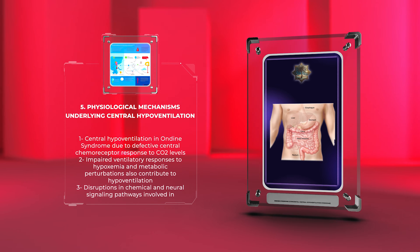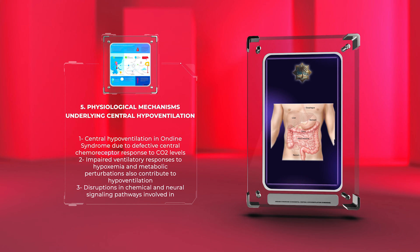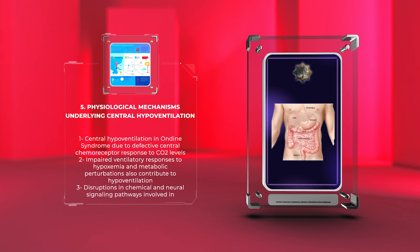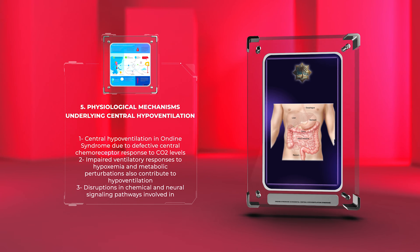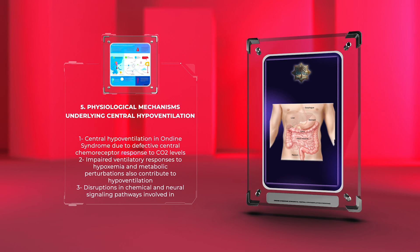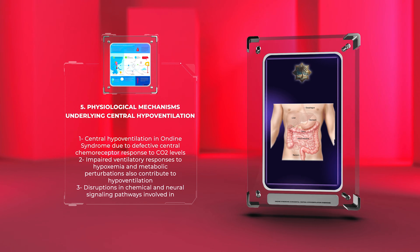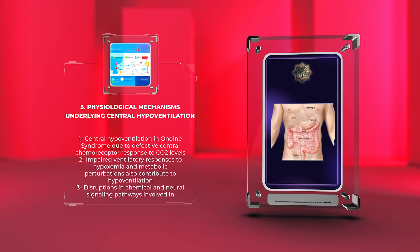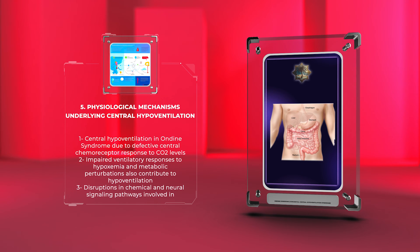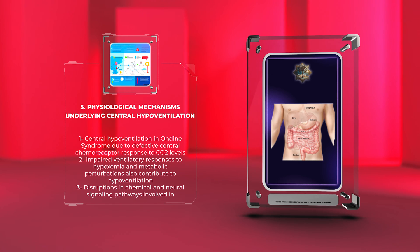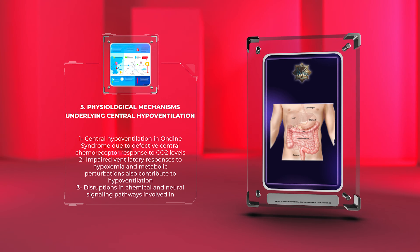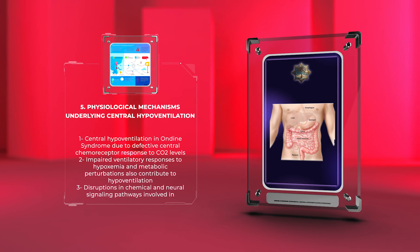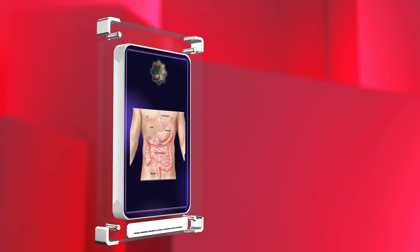Dysregulation of FOX2B expression ultimately leads to the impaired automatic control of breathing during sleep. The central hypoventilation in Ondine syndrome results from several physiological mechanisms: a defective central chemoreceptor response to elevated CO2 levels, blunted ventilatory drive, impaired responses to hypoxemia, and disruptions in the chemical and neural signaling pathways involved in respiratory regulation.